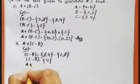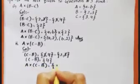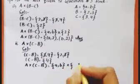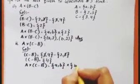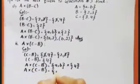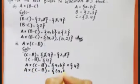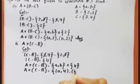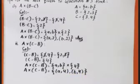Now we find A cross (C minus B). A value is {a, b}, cross C minus B which is {4}. We find the Cartesian product — first pair is (a, 4), then (b, 4). So A cross (C minus B) is {(a,4), (b,4)}.